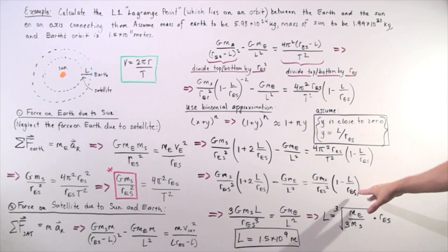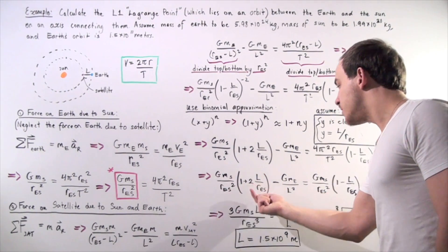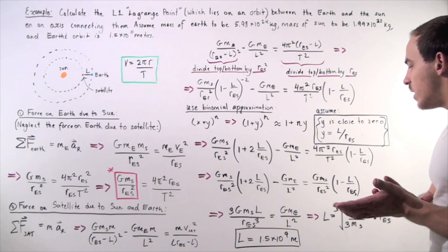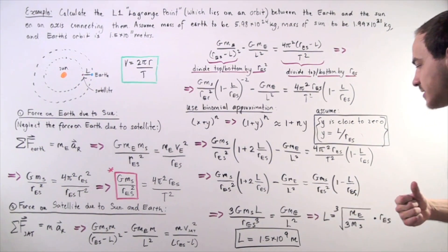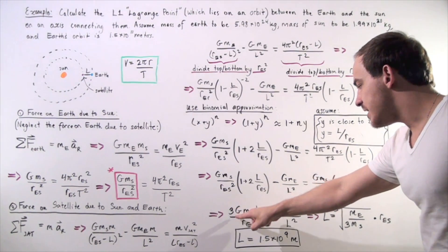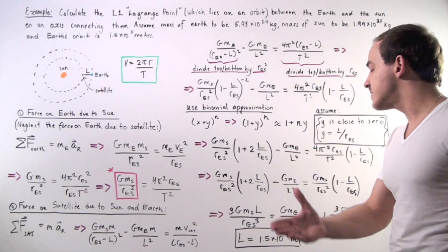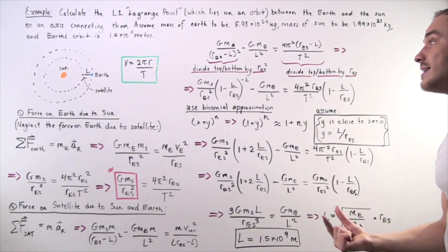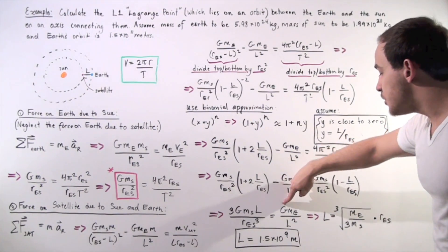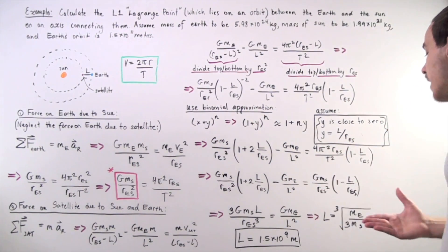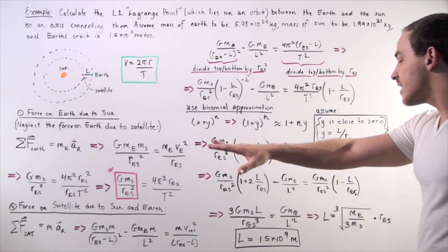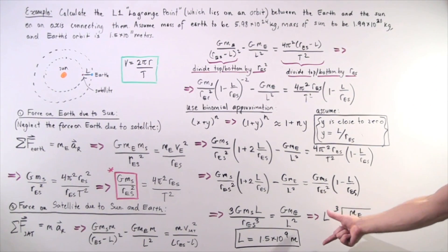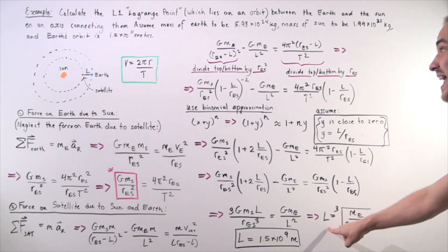We simply distribute the terms on both sides, then subtract and bring everything to one side. We get: 3 times the gravitational constant G times the mass of the Sun times L, divided by the radius of the Earth's orbit cubed, equals G times the mass of the Earth divided by L squared. We bring L to one side and everything else to the other — notice the G's cancel — and we're left with the following value.